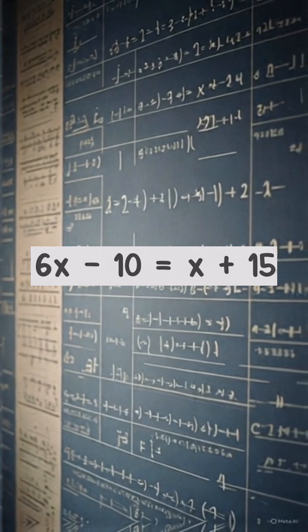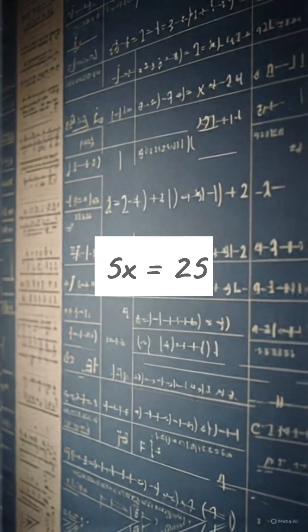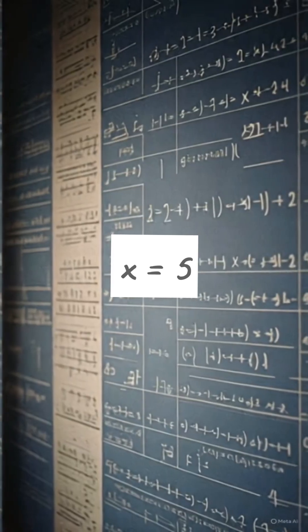To solve for x, we'll first subtract x from both sides to get 5x minus 10 equals 15. Then, we'll add 10 to both sides, resulting in 5x equals 25. Finally, dividing both sides by 5, we find that x equals 5.